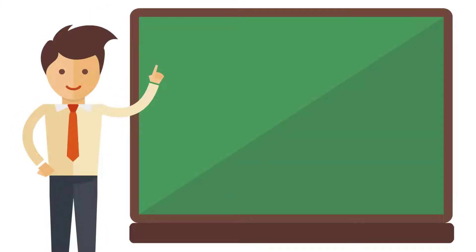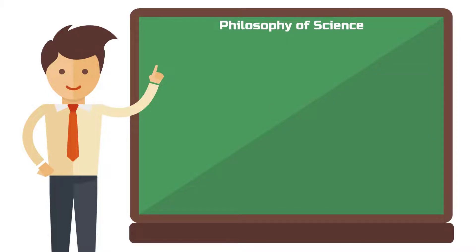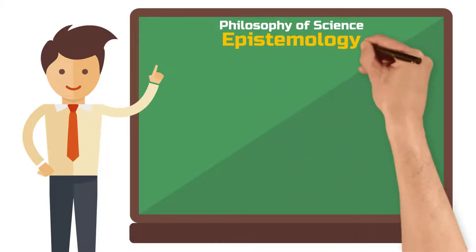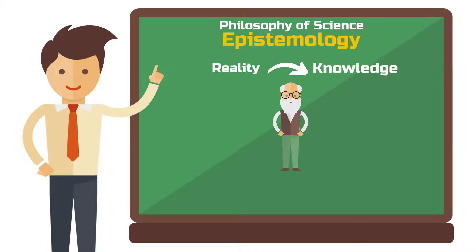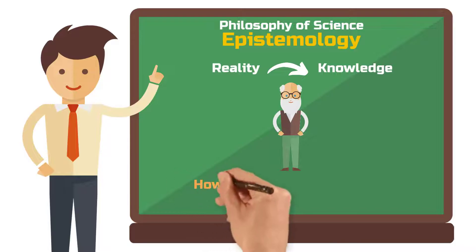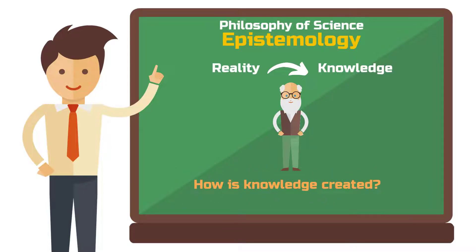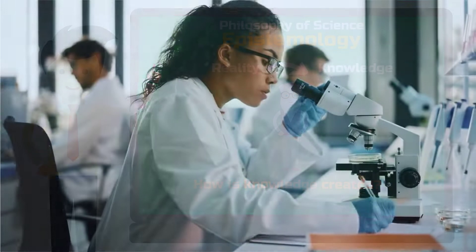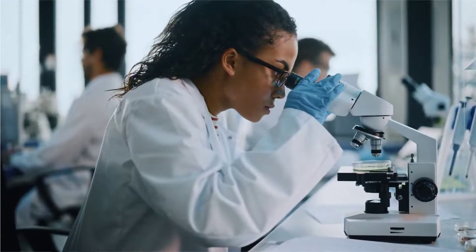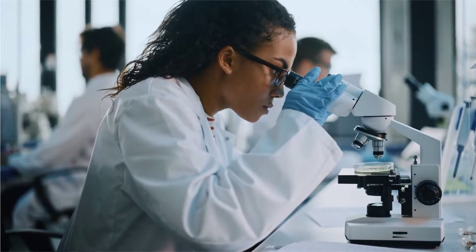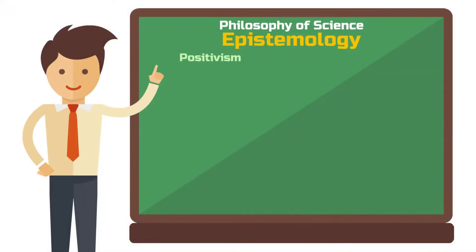To understand mixed methods it's worth taking a brief look into the philosophy of science. Epistemology refers to theories of knowledge and describes how researchers can convert reality to knowledge — in short, how is knowledge created? In today's research landscape we can broadly distinguish between two prevailing epistemologies: positivism and interpretivism.